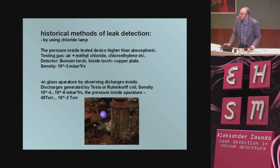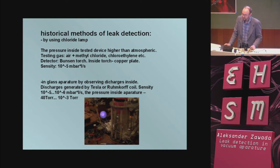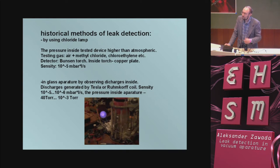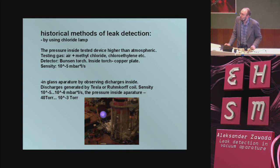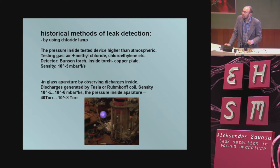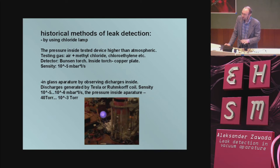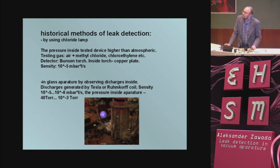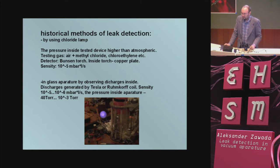In glass apparatus, a very popular method of testing for leaks is observing discharge inside the apparatus. We create discharges using a Tesla or Ramcorp coil. Sensitivity of this method is 10⁻⁵ to 10⁻⁶ millibar·liter per second. If we have a leak, the color of the discharge is violet. The pressure inside should be in the range of 40 to 10⁻³ torr; below that we have darkness and can't observe anything.